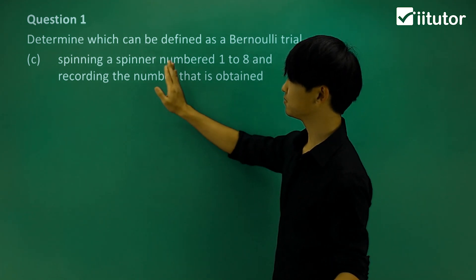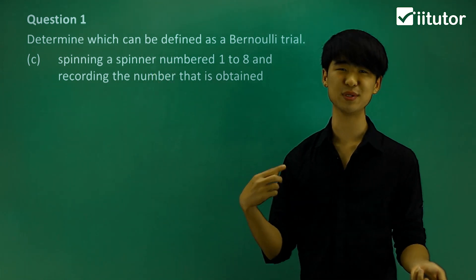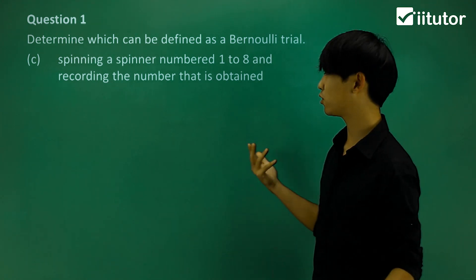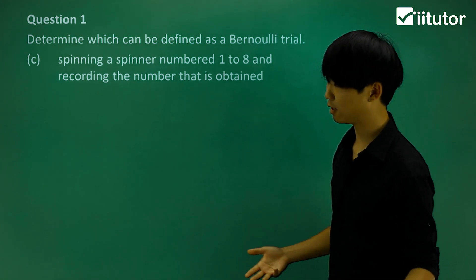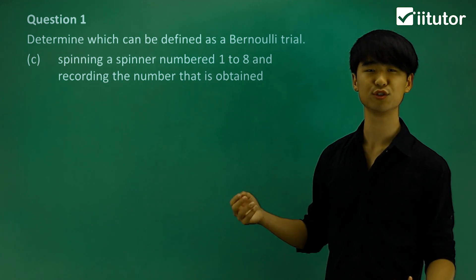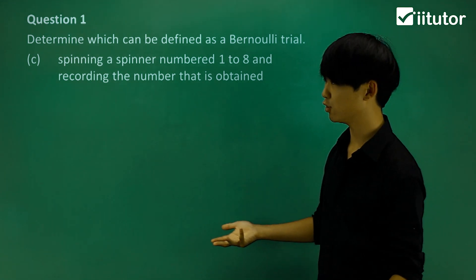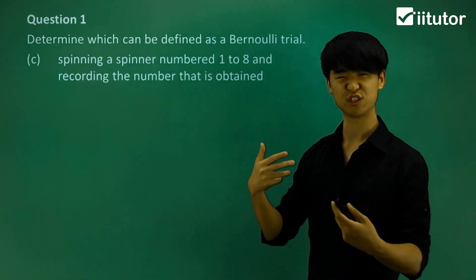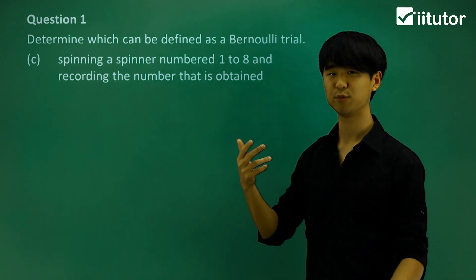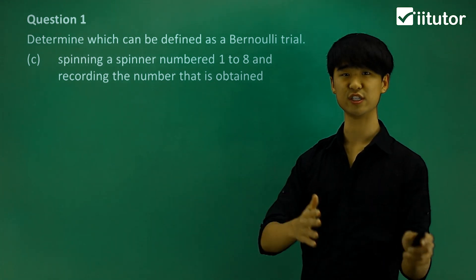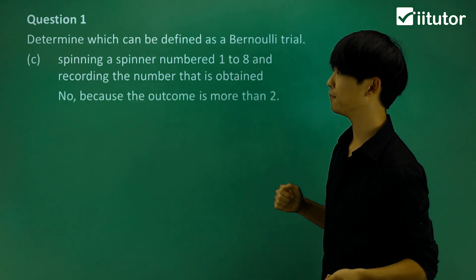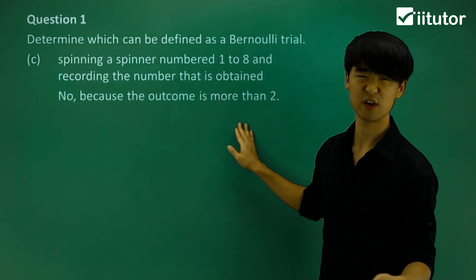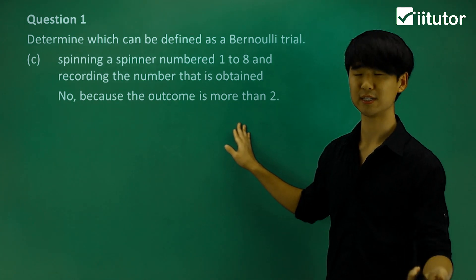In the next one, we have spinning a spinner numbered one to eight and recording the number obtained. This is very similar to rolling the dice. If I record the outcomes, it's going to be all the numbers through one to eight instead of just a binomial. So no, it's not a Bernoulli trial because there are more than two outcomes.